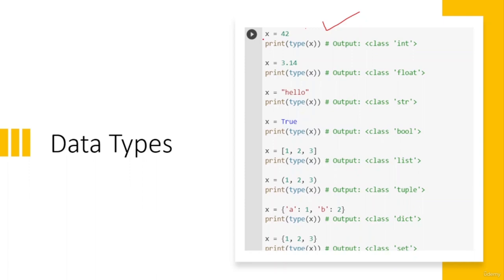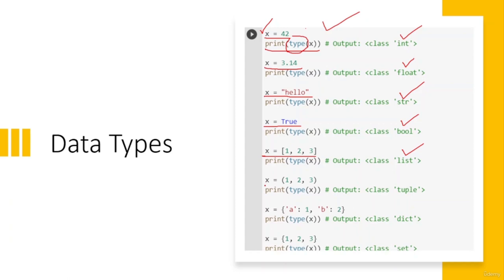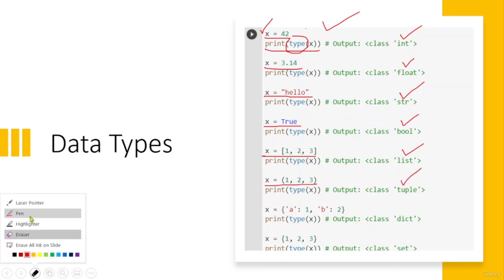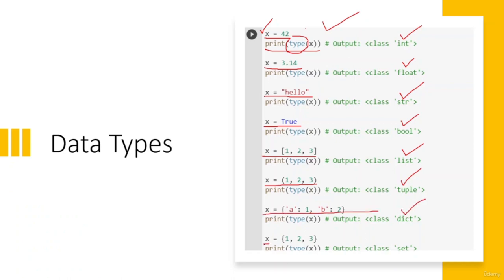Here is the demo code for different data types. Since Python is dynamically typed, we don't mention the data type when assigning values — Python determines it automatically at runtime. For example, 'x = 42' is integer, and 'print(type(x))' outputs 'int'. Similarly, a floating number gives 'float', a string gives 'str', 'True' gives 'bool', a list gives 'list', a tuple gives 'tuple', a dictionary gives 'dict', and a set gives 'set'. You can find out the data type of any variable using the 'type()' keyword.